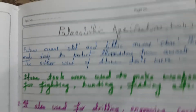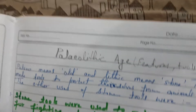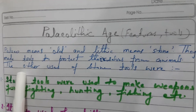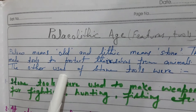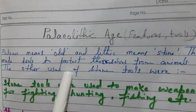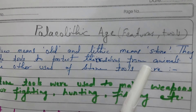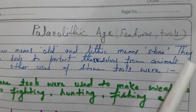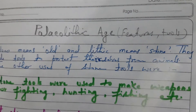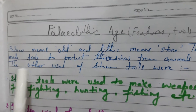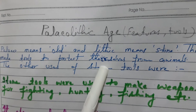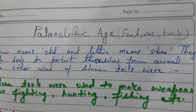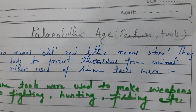The Paleolithic Age is also called the Old Stone Age. 'Paleo' means old and 'lithic' means stone, so it literally means old stone age. Early men made tools to protect themselves from animals.